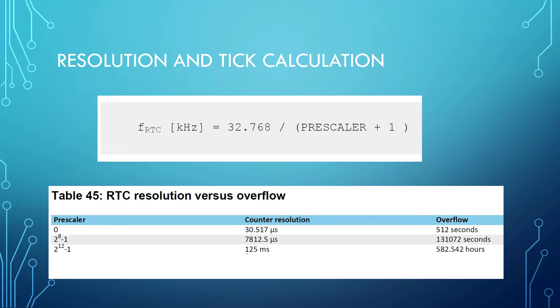With prescaler 4095, each tick is 125 milliseconds. We can use these low power, low frequency timers to generate events on ticks, on comparison, and on overflow. Overflow is not normally used because it represents a very long period of time. Normally we use the comparison and tick events.